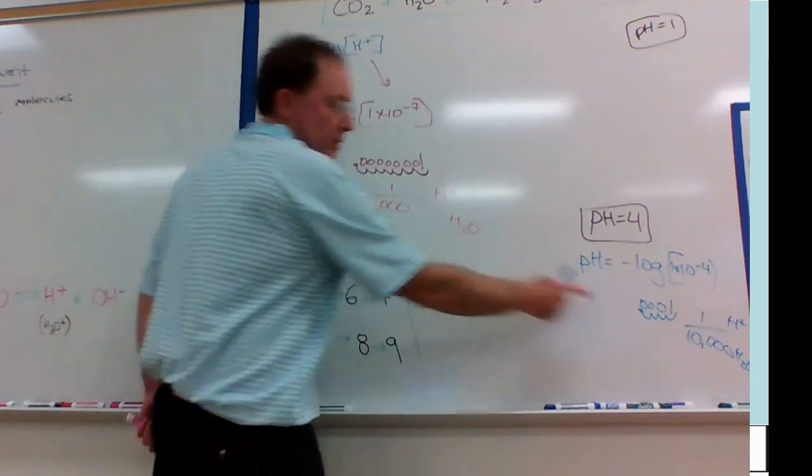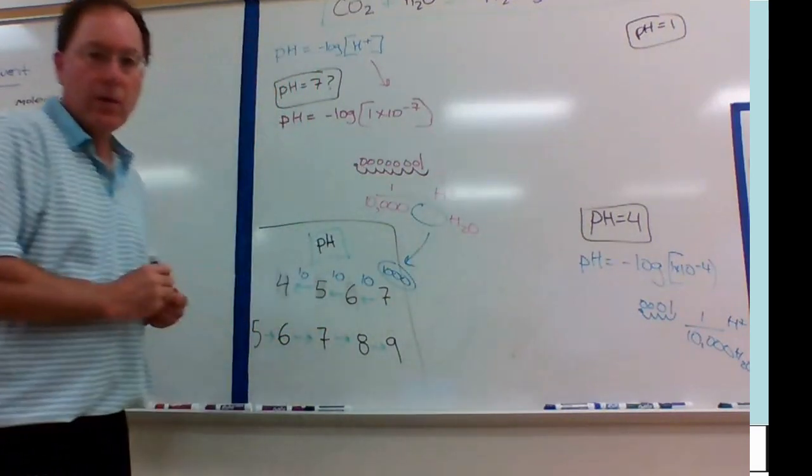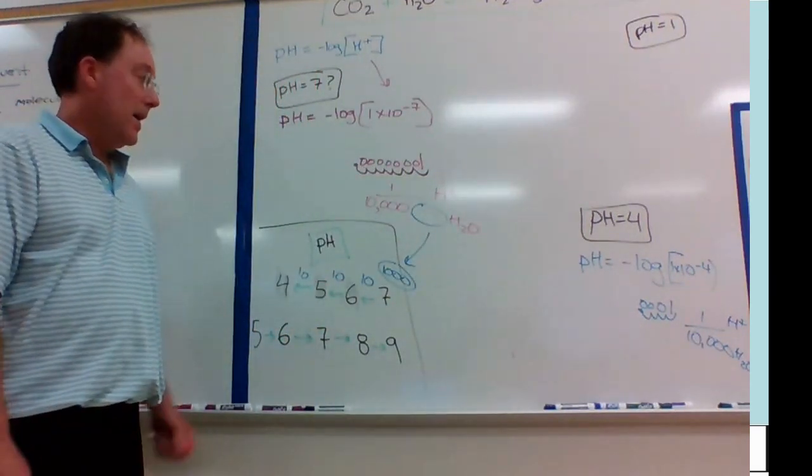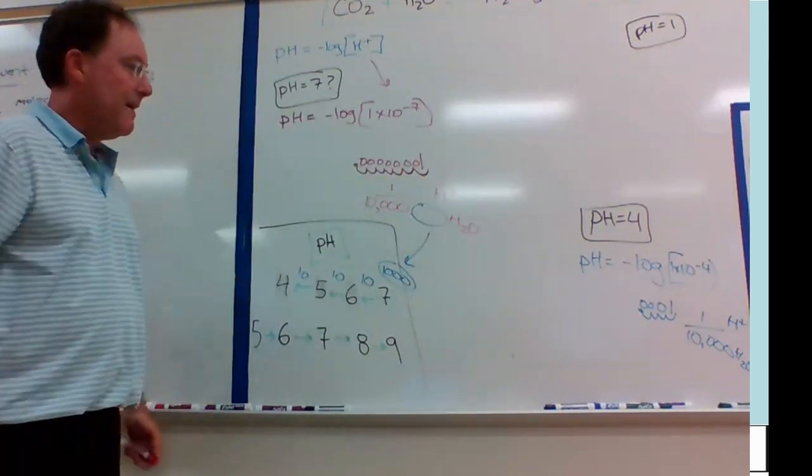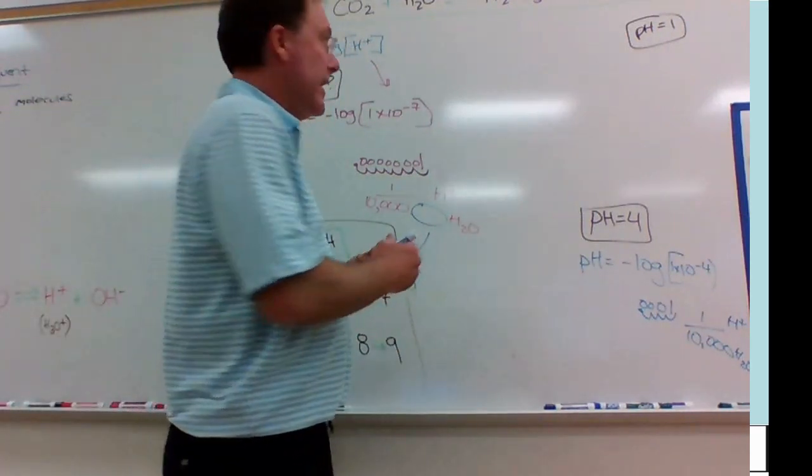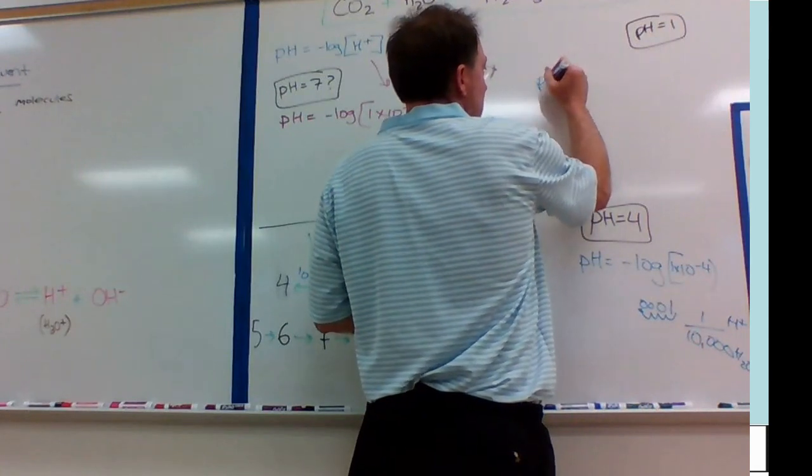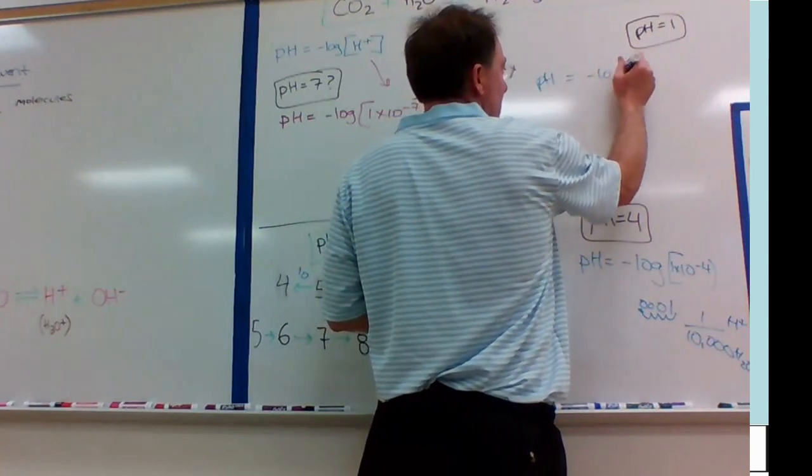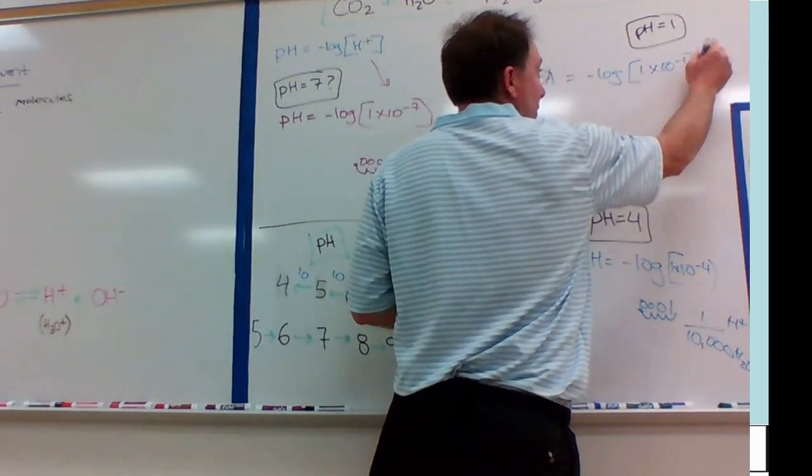Now, is that 1,000 times more acidic than this guy? Well, this was 1 out of every 10 million, and now we're at 10,000. So if we were to take 1, 2, 3, so now these are equal, and that 1, 2, 3 would be representative of that 1,000 times greater or less, depending if you're going more acidic or less acidic.